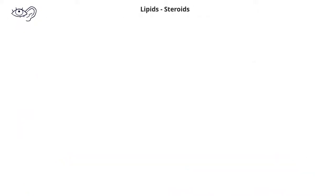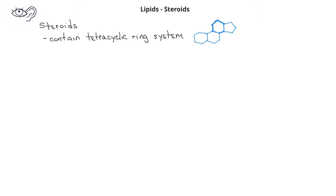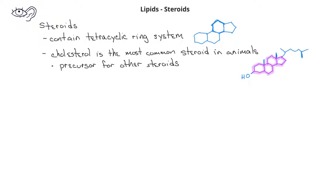The final class of lipids we'll review are the steroids. Hormones are chemical messengers, or organic compounds synthesized in glands and delivered by the bloodstream to target tissues in order to stimulate or inhibit some biological process. Many hormones are of the steroid class of lipids. Steroids contain a tetracyclic ring system with three six-membered rings and one five-membered ring. Cholesterol is one of the most common examples of steroids — it's the most abundant steroid in animals, and is a precursor for the synthesis of other steroids. Cholesterol can also serve as a component of cell membranes.